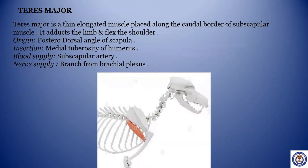Teres major: a thin elongated muscle placed along the caudal border of subscapular muscle. It adducts the limb and flexes the shoulder. Origin: posterior dorsal angle of scapula. Insertion: medial tuberosity of humerus. Blood supply: subscapular artery. Nerve supply: branch from brachial plexus.